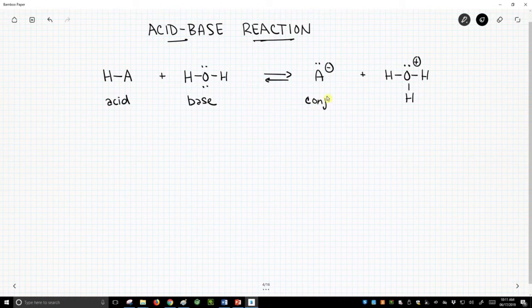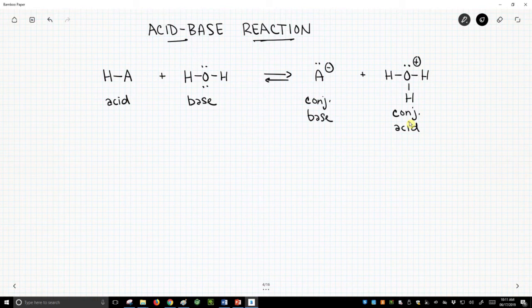This is now the conjugate base, and we will form H3O+, and this is our conjugate acid. So the conjugate acid and conjugate base were identifying the roles if this reaction were to proceed in the reverse process.